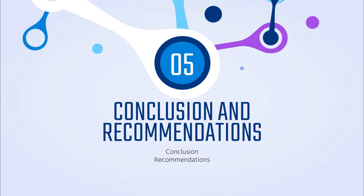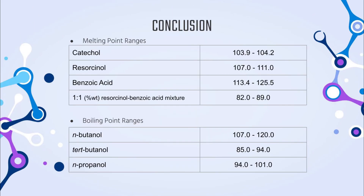From the experiment, the melting points of catechol, resorcinol, benzoic acid, and the 1:1 resorcinol-benzoic acid mixture are summarized in the table shown. Benzoic acid has the highest melting point due to dimer formation, and the two isomers have relatively lower melting points, with catechol having a lower one due to intramolecular hydrogen bonding between the ortho-positioned hydroxy substituents. The 1:1 resorcinol-benzoic acid mixture is extremely low due to melting point depression, as the IMF in the entire system is weaker due to the inability to pack two different structures effectively at the molecular level. For n-butanol, tert-butanol, and n-propanol, tert-butanol has the lowest boiling point due to being branched and spherical, while n-butanol has the highest due to more points for London dispersion forces and thus higher overall IMF.